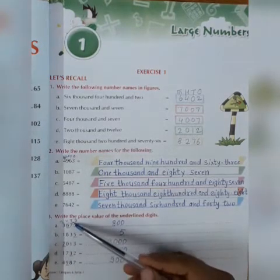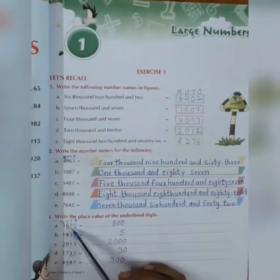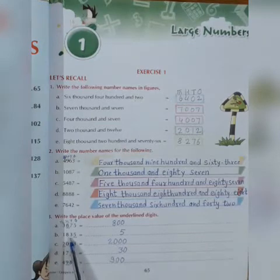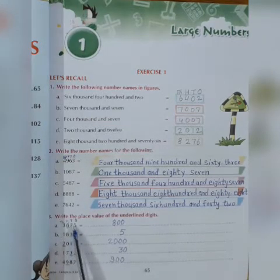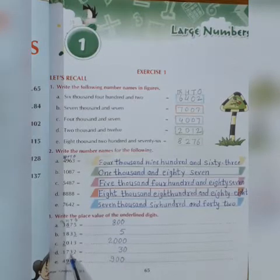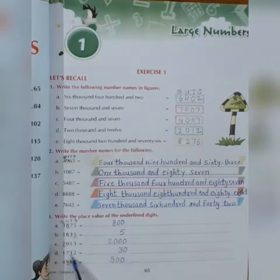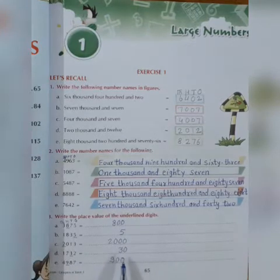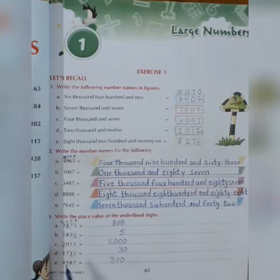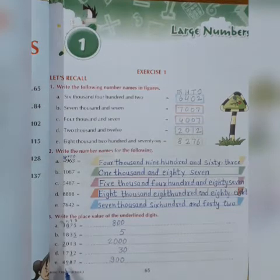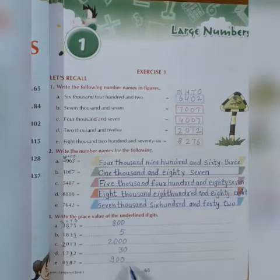Children, 10's place is 3, so we will write 30. The place value of 3 is 30. 30 has 2 digits. Now E: 4987. Place value of 9? 900. So we will write 900.